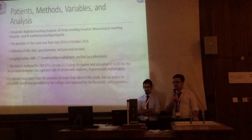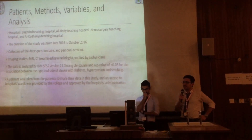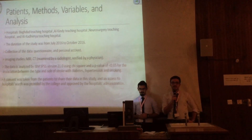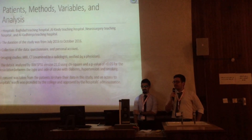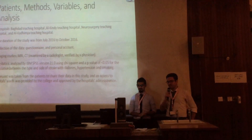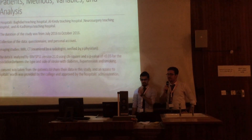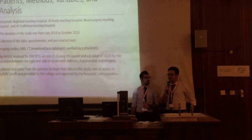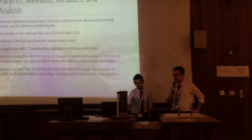The data was analyzed by IBM SPSS version 21 using chi-square and a p-value of less than 0.05 for the association of the type and site of stroke with the factors — diabetes, hypertension, and smoking. Consent was taken from patients to share their data, and access to hospital wards was provided by the college and approved by the hospital's administration.